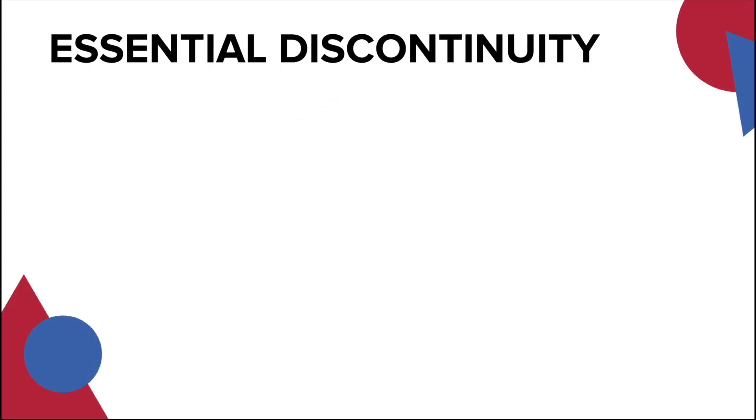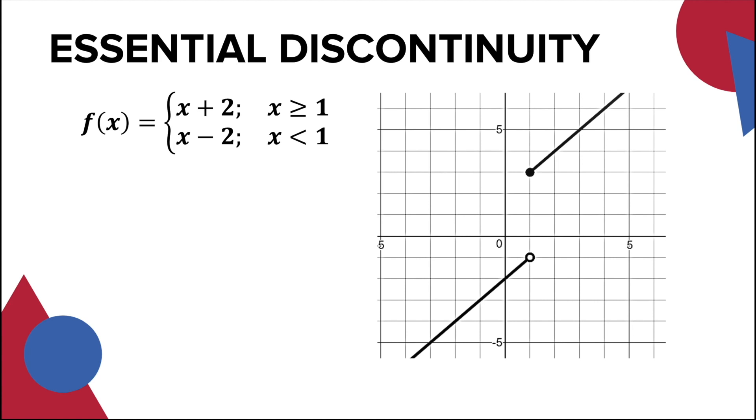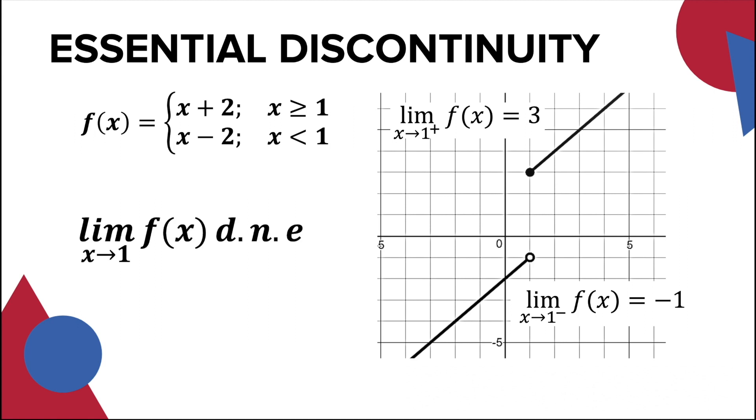So for the function x + 2 if x ≥ 1 and x - 2 if x < 1, the right-hand limit is equal to 3 while the left-hand limit is equal to -1. Since the left-hand limit is not equal to the right-hand limit, the limit does not exist. This makes the graph discontinuous at x = 1.